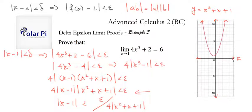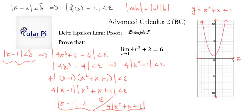Now, it's pretty tempting to think that delta is epsilon divided by 4 times absolute value of x squared plus x plus 1. The only thing we have left to do is to get rid of that expression involving x, and this is how we could do that.